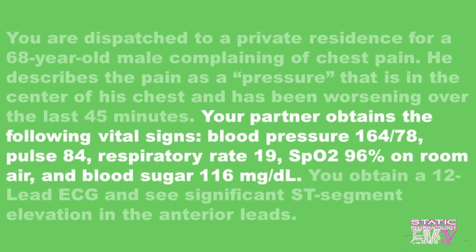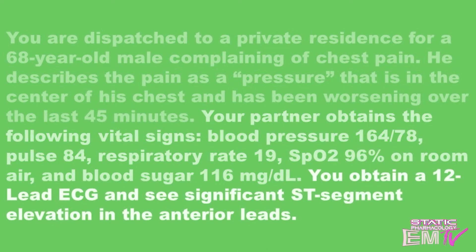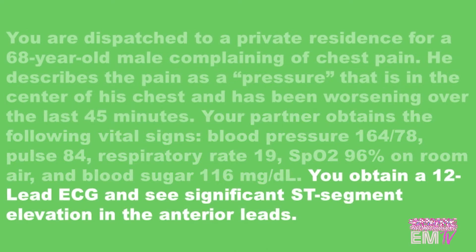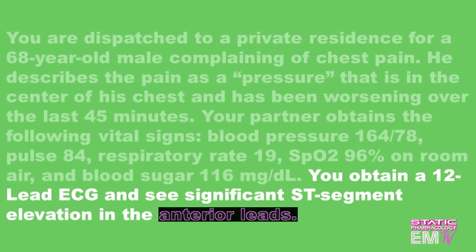Your partner obtains the following vital signs: blood pressure 164 over 78, pulse 84, respiratory rate 19, SpO2 96% on room air, and blood sugar 116. You obtain a 12-lead ECG and see significant ST segment elevation in the anterior leads.